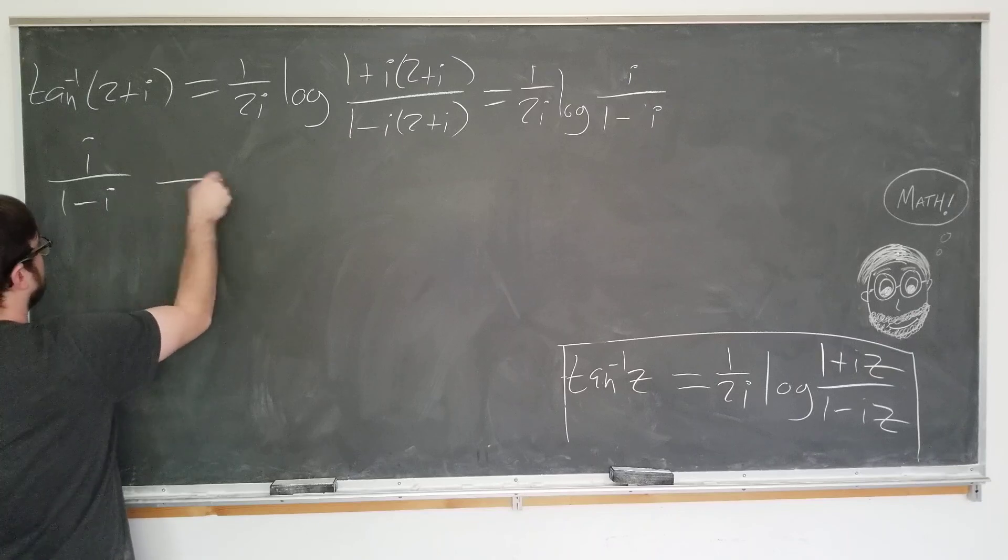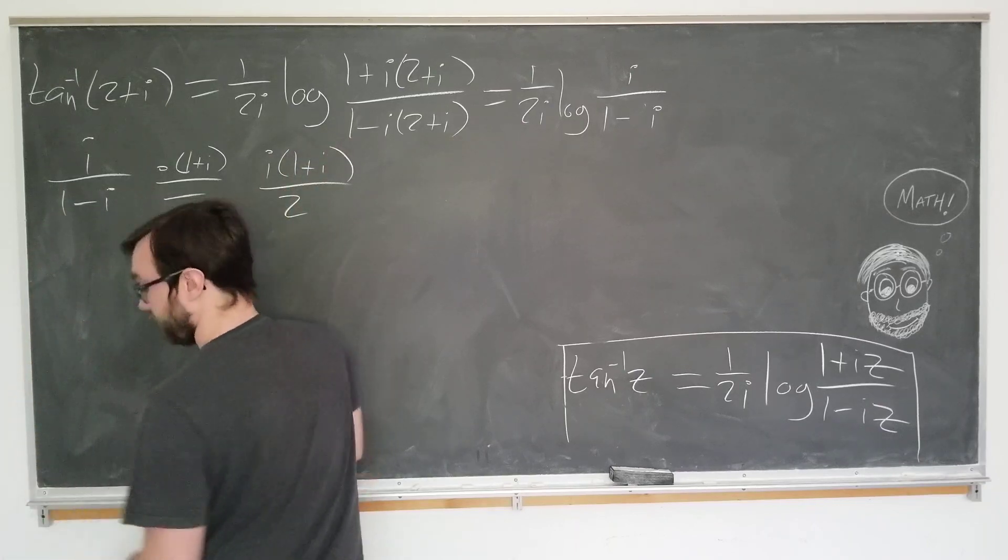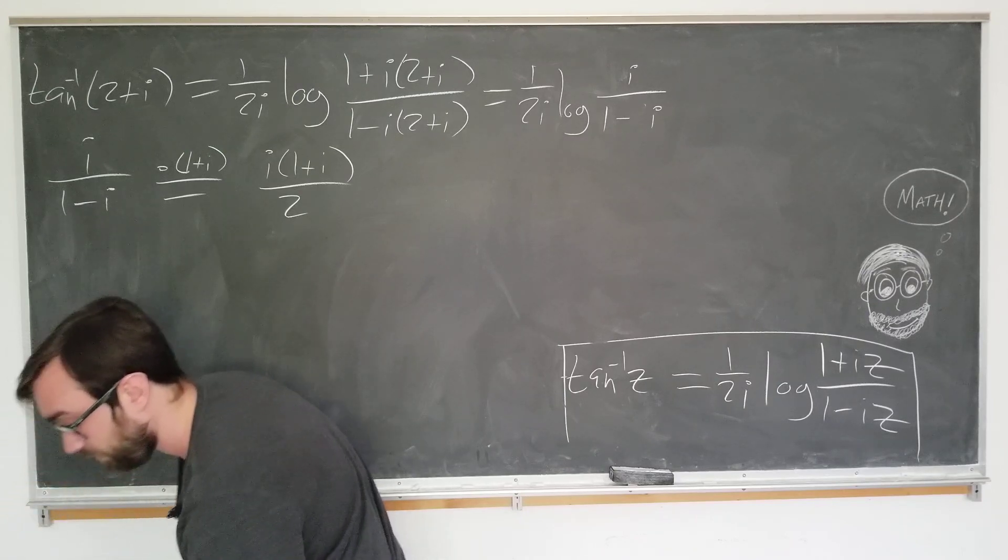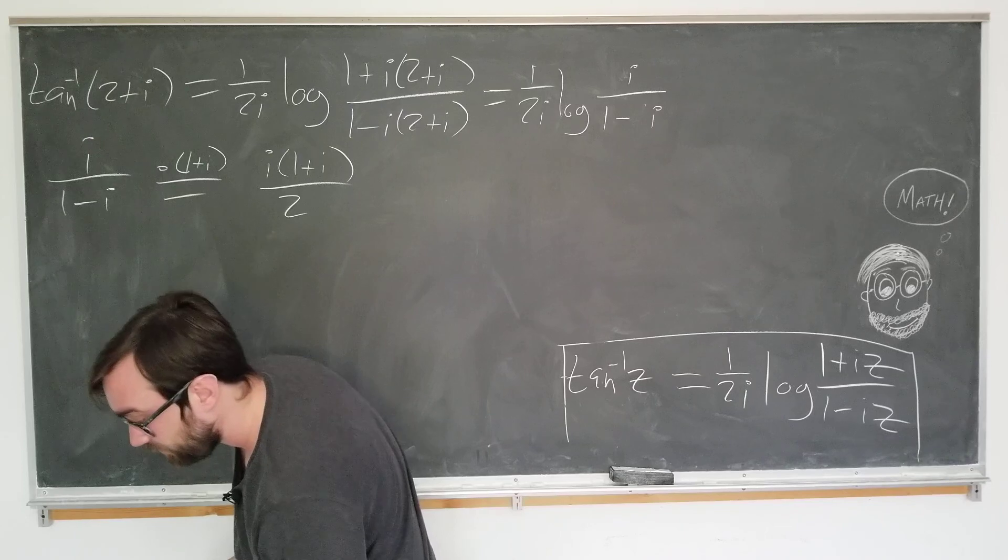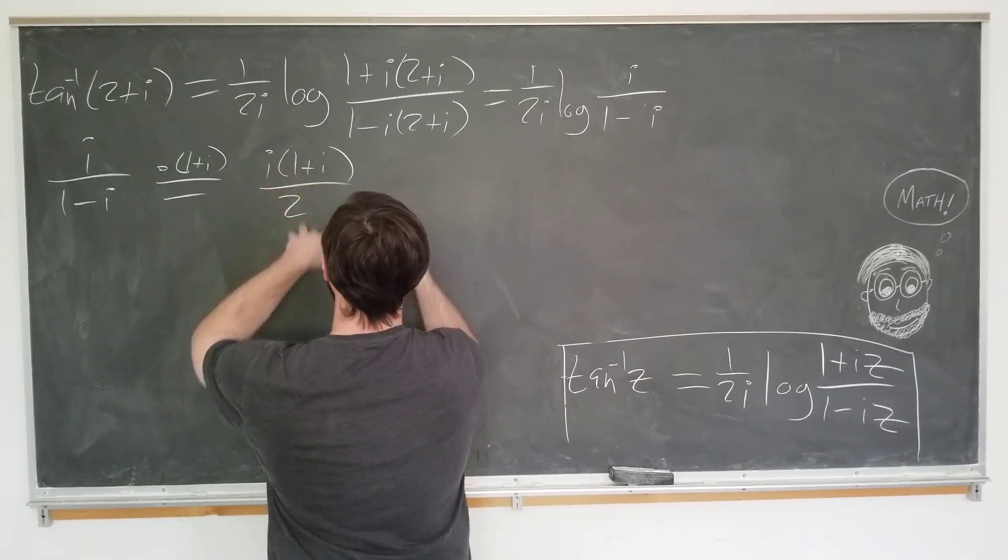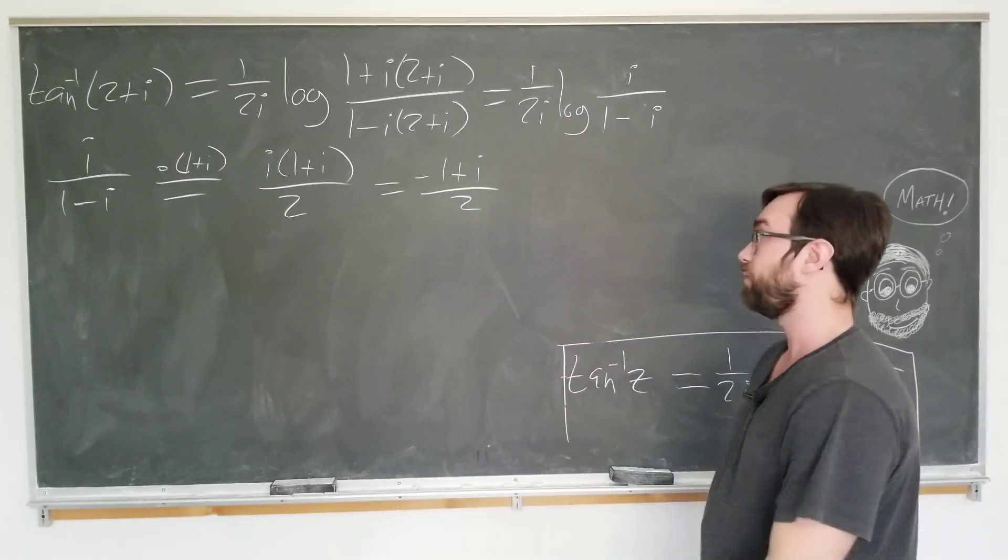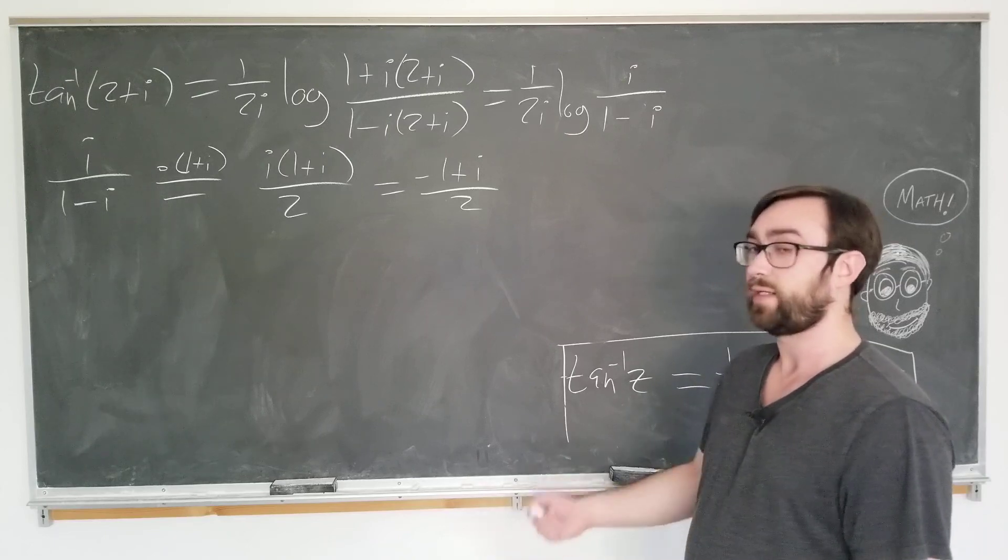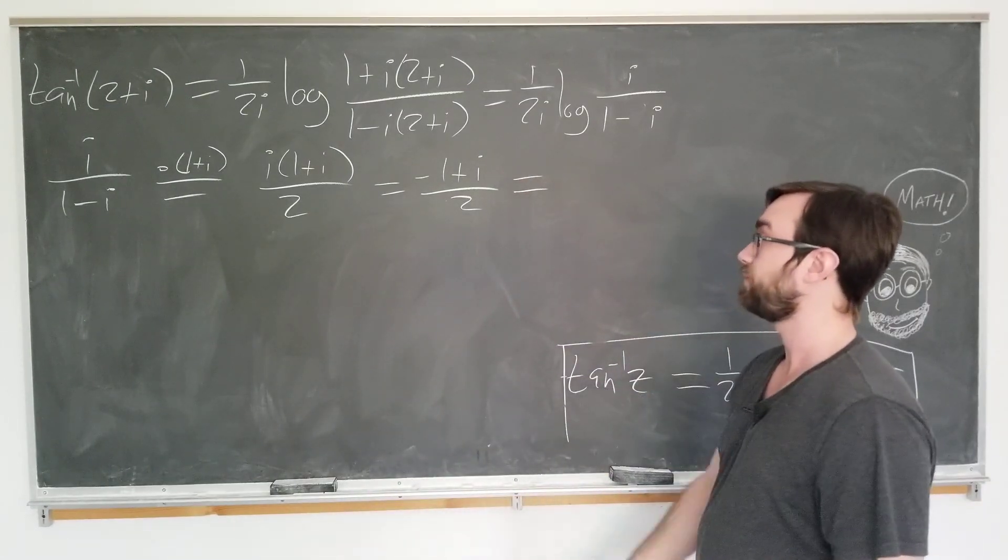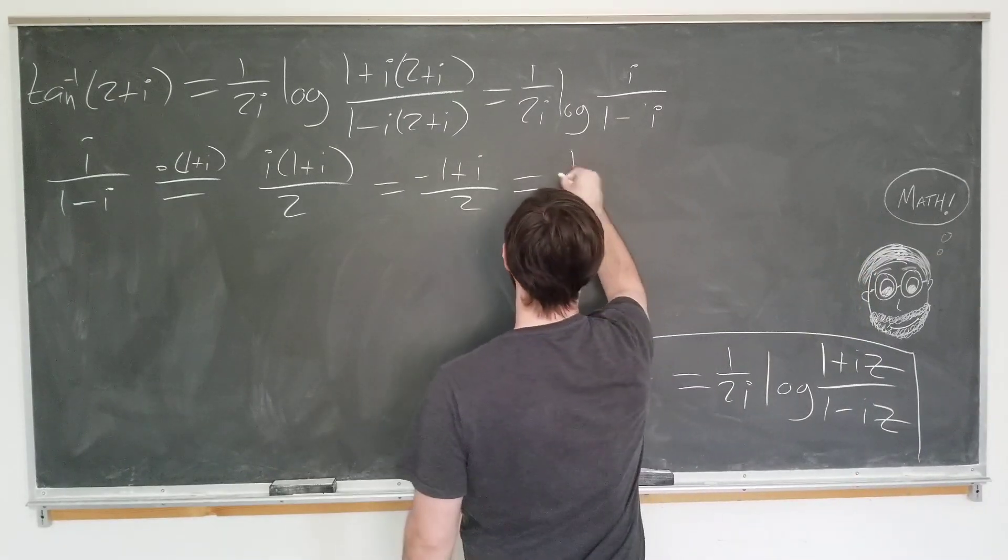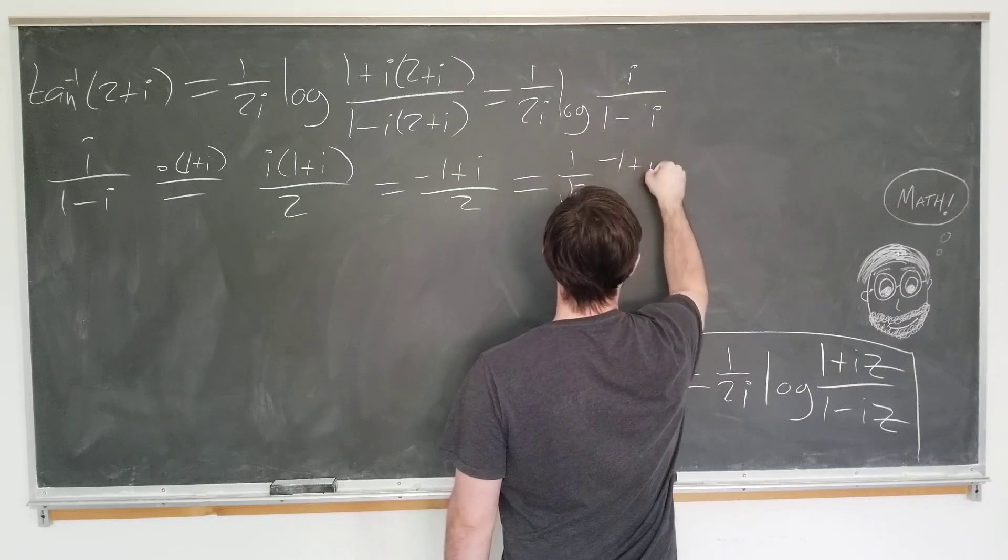i over 1 minus i is, multiplying by 1 plus i on both sides over 2, we get i minus 1, minus 1 plus i over 2. Now, we want to write this in polar form. We could use straightforward techniques from elementary complex variable theory to write it in r e to the i theta form by brute force. But we want to recognize that this is closely related to the pi over 4 that we spoke about earlier. I'm going to write it as 1 over square root of 2 times minus 1 plus i over square root of 2.